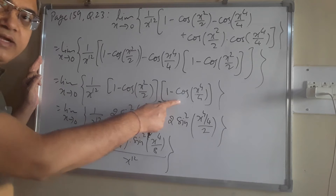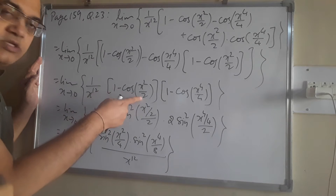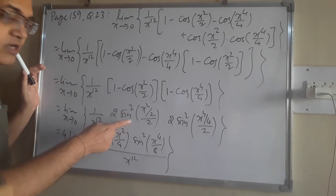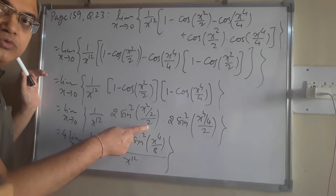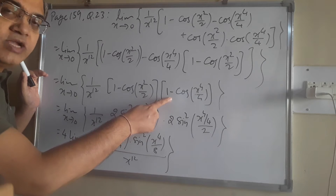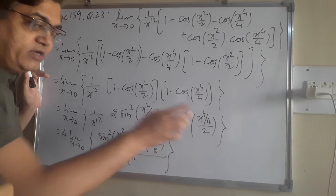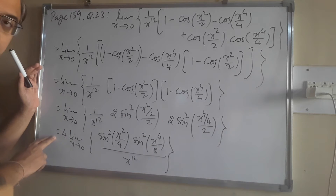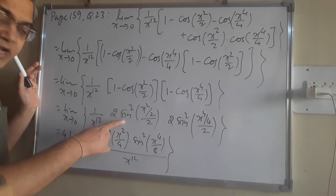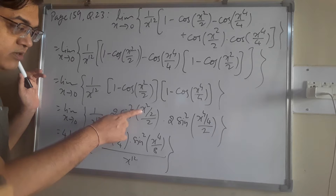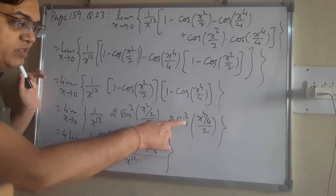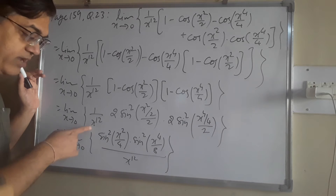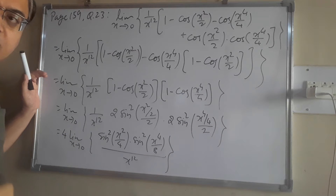Now these product terms are in the form of 1 minus cos(theta), so we apply the formula: 1 minus cos(theta) = 2 sin²(theta/2). Here also 2 sin²(theta/2). The constant 2 into 2 = 4 goes outside the limit. Rewriting: sin²(x²/4) · sin²(x power 4 by 8), with x power 12 in the denominator.